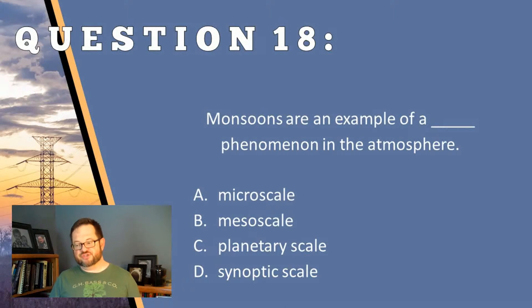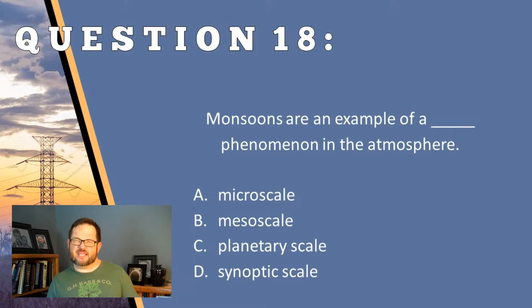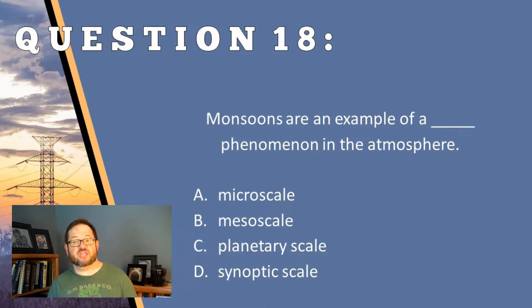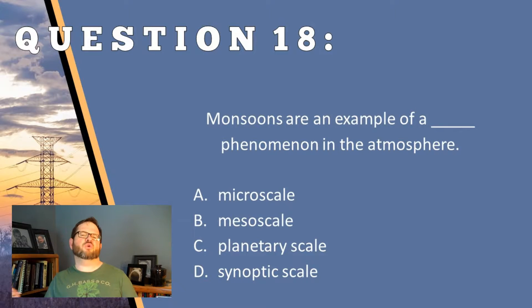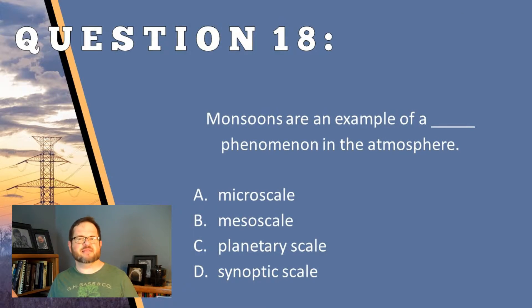These are planetary scale features of the atmosphere. This word 'planetary scale' can be kind of distracting because it might make you think it has to affect the whole planet. No — planetary scale just means it's on the order of a few thousand to maybe 10,000 kilometers across.